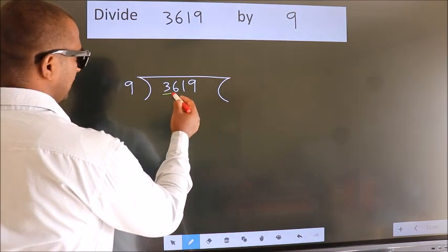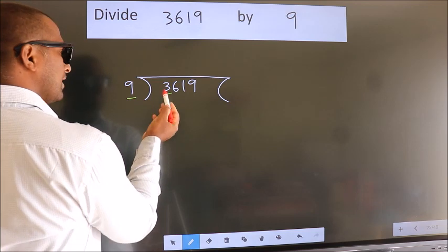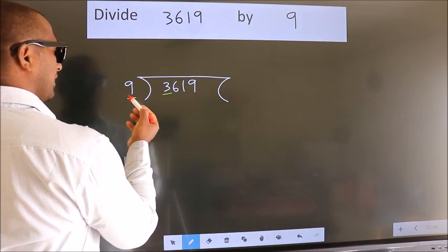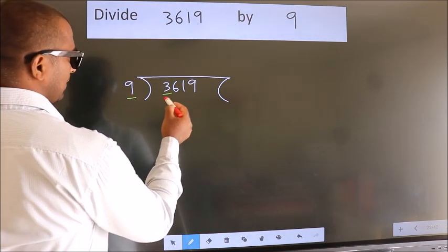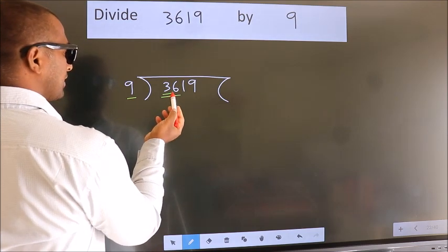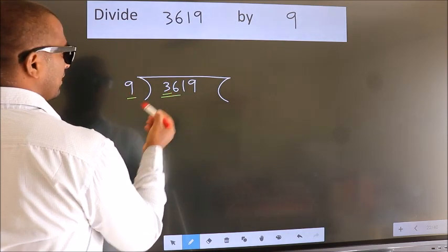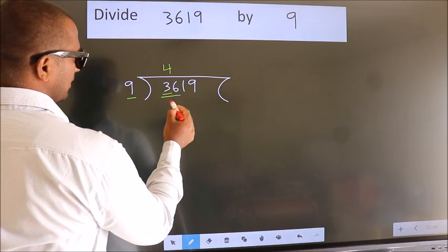Here we have 3. Here 9. 3 smaller than 9. So, we should take 2 numbers, 36. When do we get 36? In 9 table. 9 fours 36.